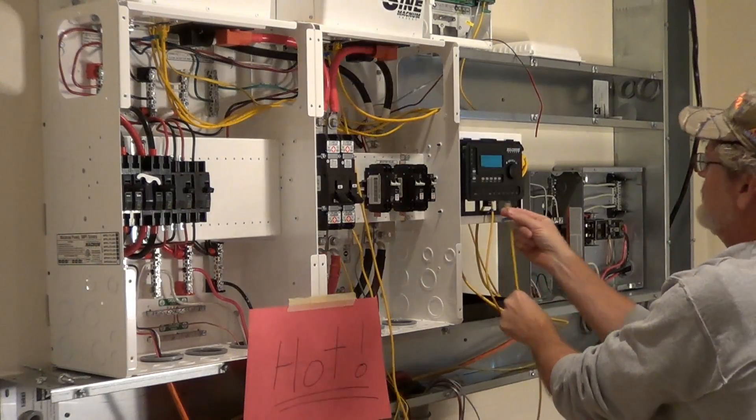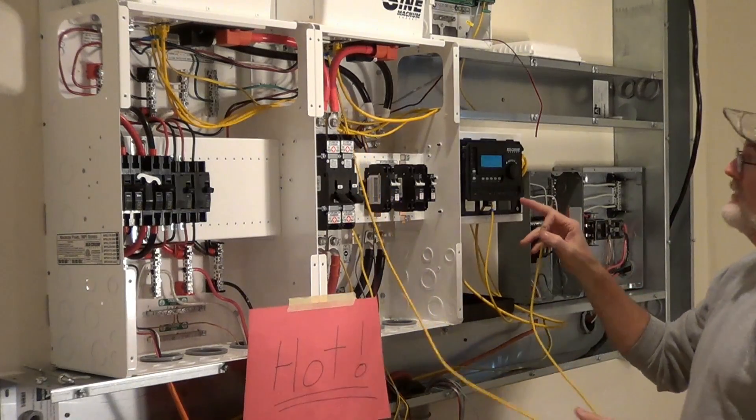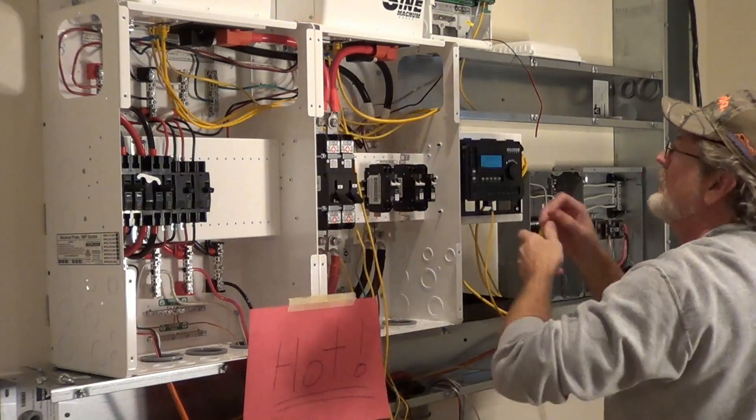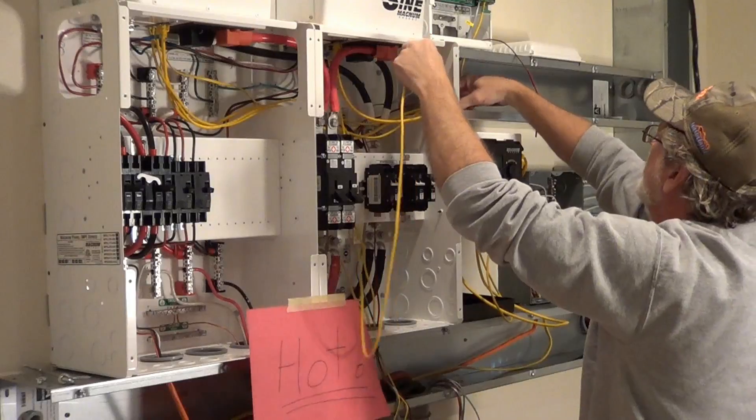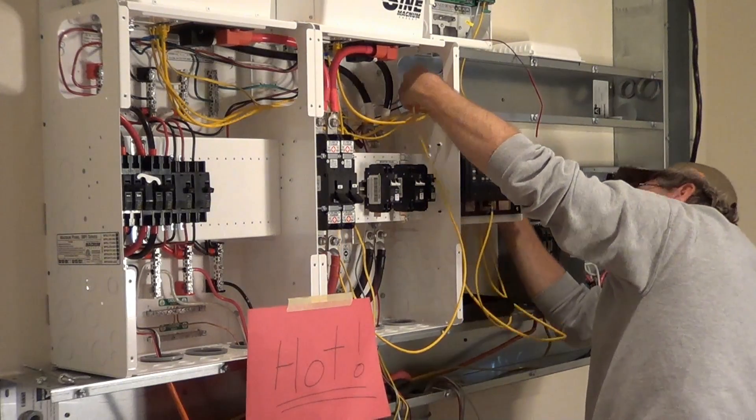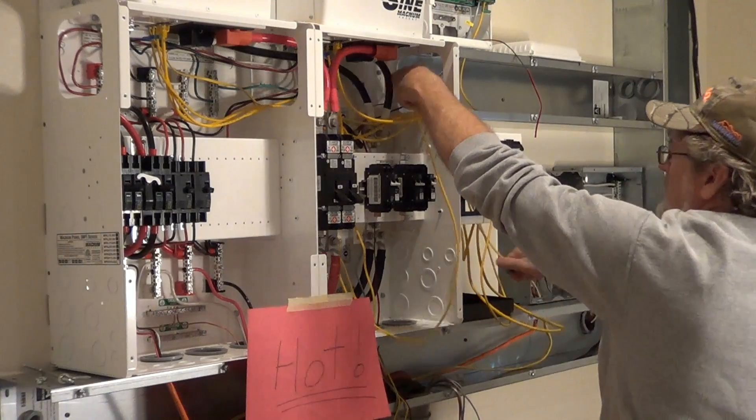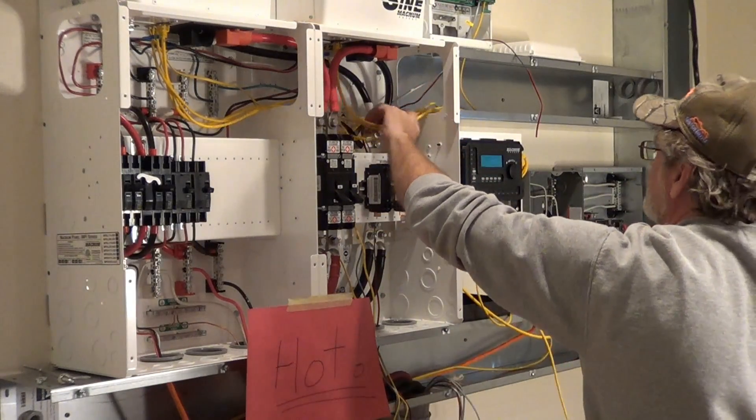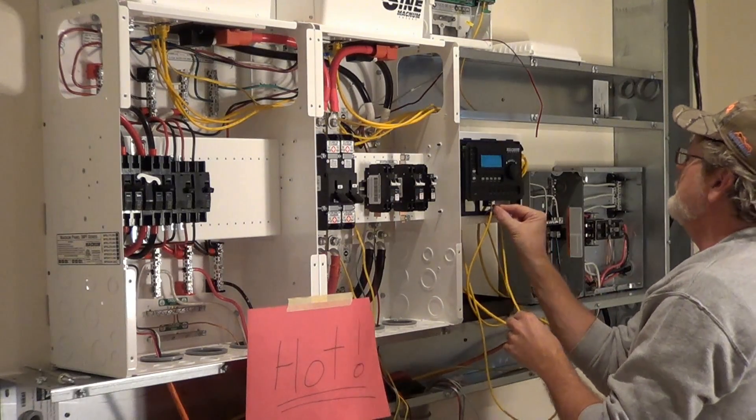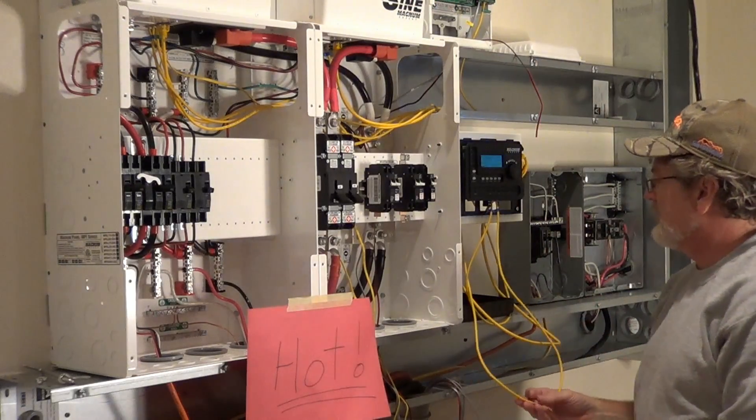And then here's P2, which goes to the P2 port on the RTR to the second inverter, the slave inverter, through here. All right, so that's P2 to the second, and that's the network connection.